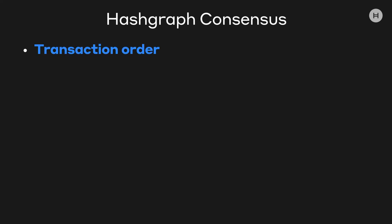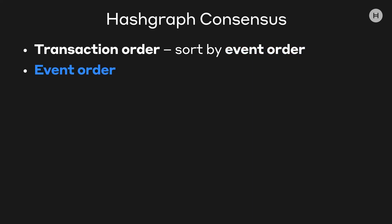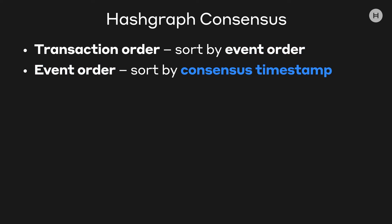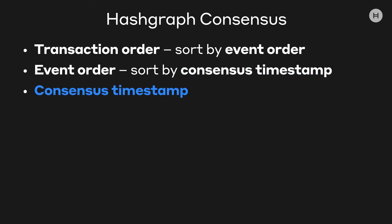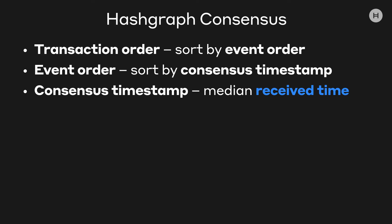So, how does Hashgraph consensus work? We want to put the transactions in order. We'll sort them by the order of the events. What's the order of the events? You just sort them by the consensus timestamp for each of these events. But what's the consensus timestamp on an event? It'll be the median of the received time — the middle of all those times when it reached everybody in the world.